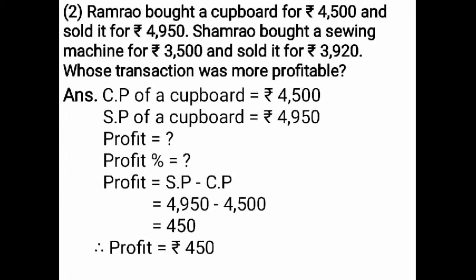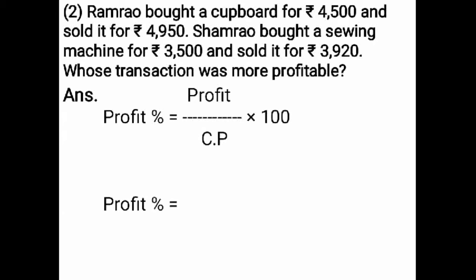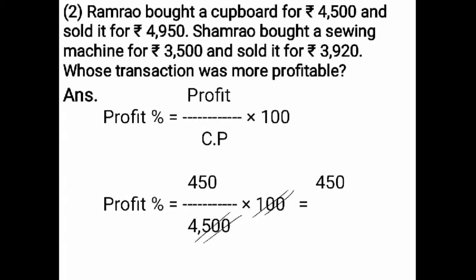After finding the profit of the cupboard, find the profit percent. The formula is profit upon cost price multiplied by 100. Substitute the values: profit of cupboard is 450, upon cost price 4,500, multiplied by 100. Cancel both zeros on numerator and denominator, giving 450 upon 45. Divide 450 by 45: 45 tens are 450, so the answer is 10%. Profit percent of cupboard is 10%.